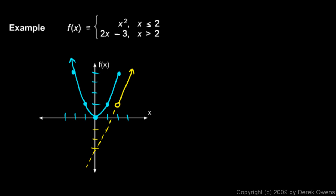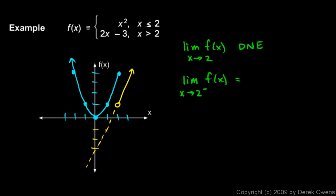We want to discuss the limit at x = 2, where the definition changes. The limit as x approaches 2 does not exist because the left and right limits both exist but are not equal. It does make sense to describe one-sided limits: the limit as x approaches 2 from the left is 4, and the limit as x approaches 2 from the right — moving along the line toward a value of 1 — is 1. Since the left and right limits are not equal, the overall limit does not exist.